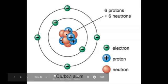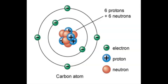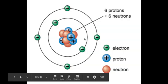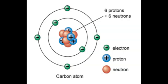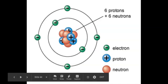Surrounding the nucleus are the negatively charged electrons. If we count the number of particles in this carbon atom, which is neutral, we must get six protons in the nucleus, and outside the nucleus we should get six electrons to balance the neutral carbon atom.